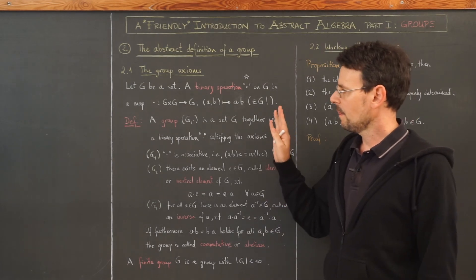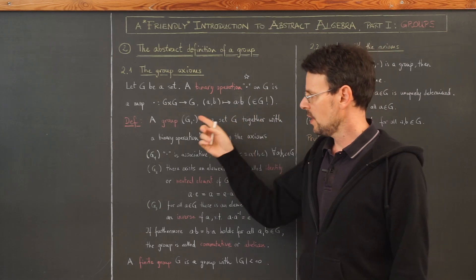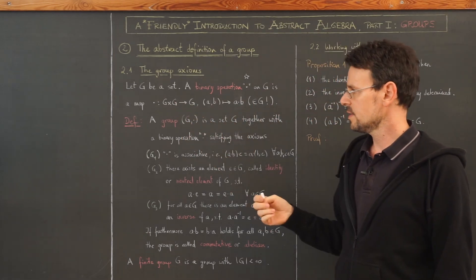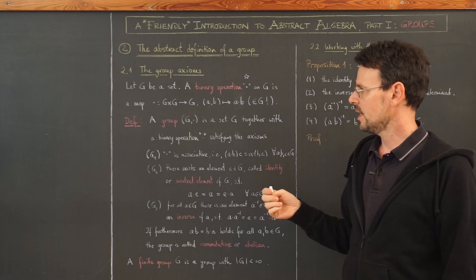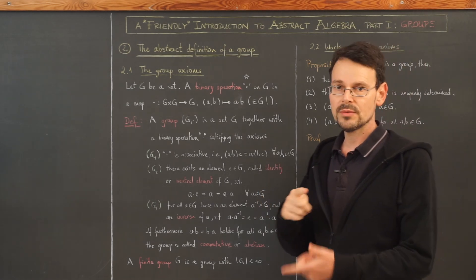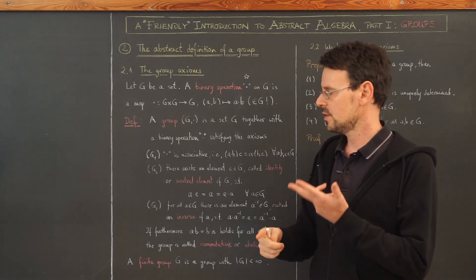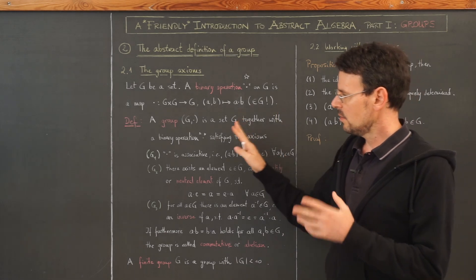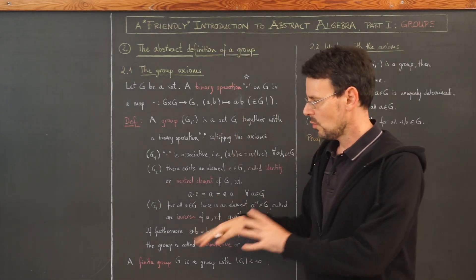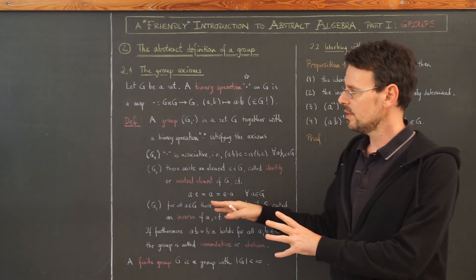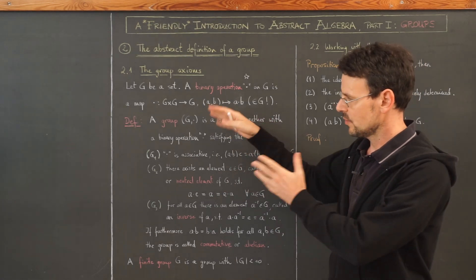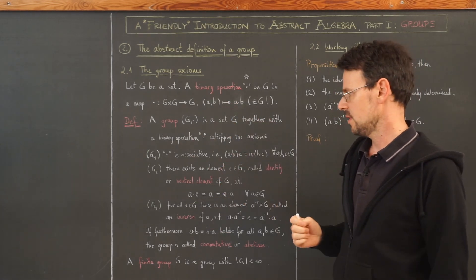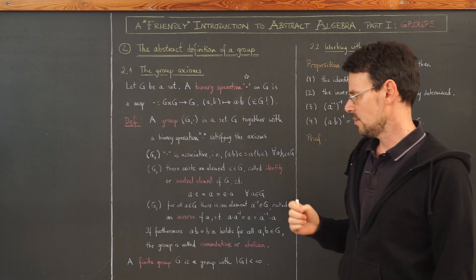You may always think about the examples from the last three lessons, like groups of symmetries, permutations, or matrices. But here, on purpose, I do not go into examples — I want to work abstractly with these axioms. That is what this video is about.